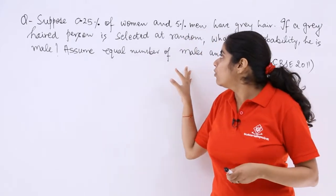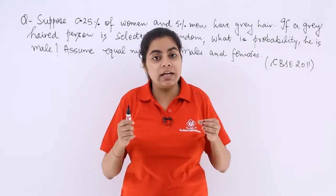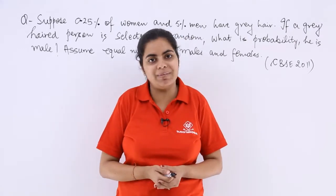Assume equal number of males and females. So you have been given the information that there are equal number of males and females. That means the probability of each is 1 by 2 and 1 by 2.